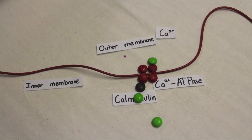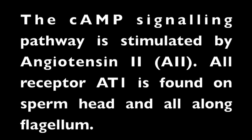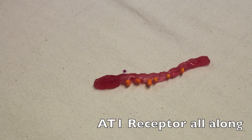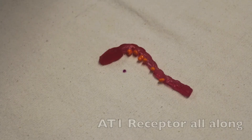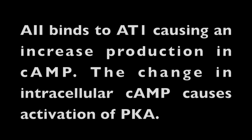The cAMP signaling pathway is stimulated by angiotensin-2. The AT1 receptor is found on the sperm head and all along the flagellum. Angiotensin-2 binds to AT1, causing an increased production in cAMP. The change in intracellular cAMP causes activation of PKA.